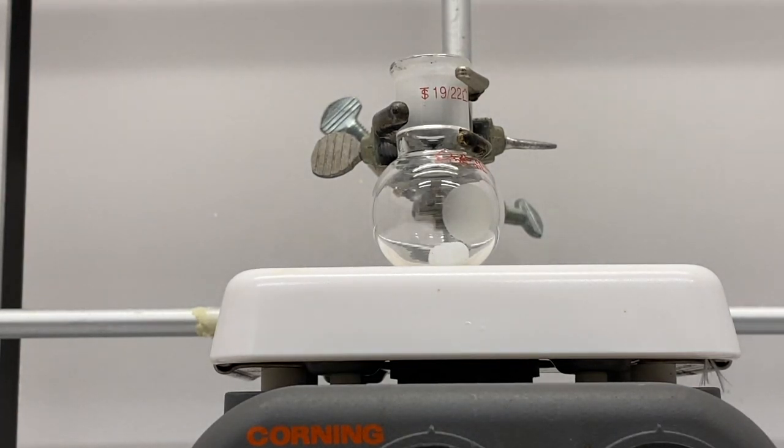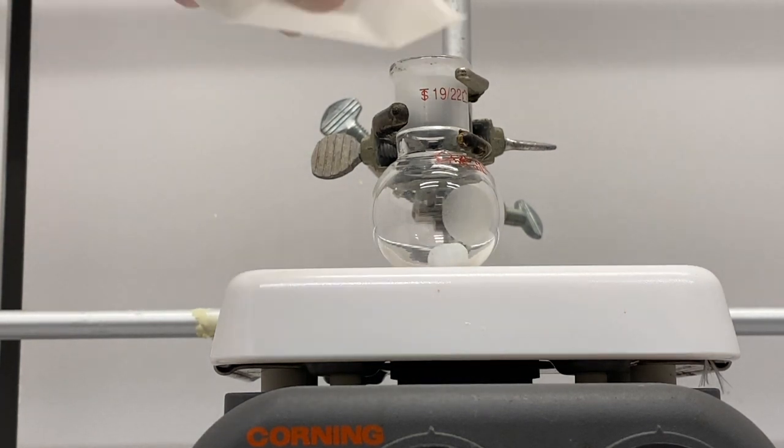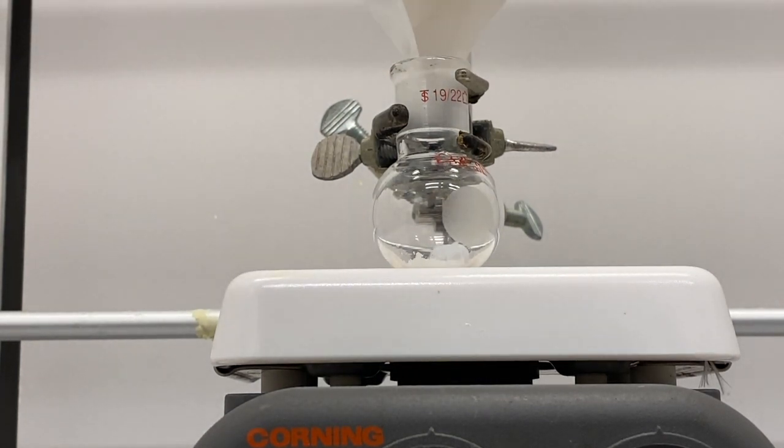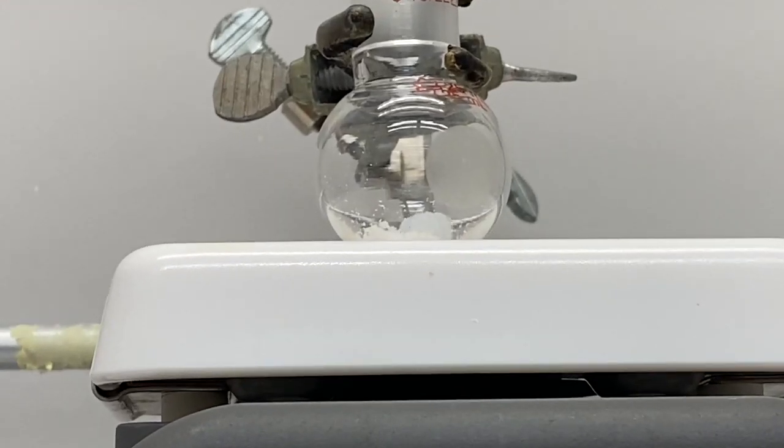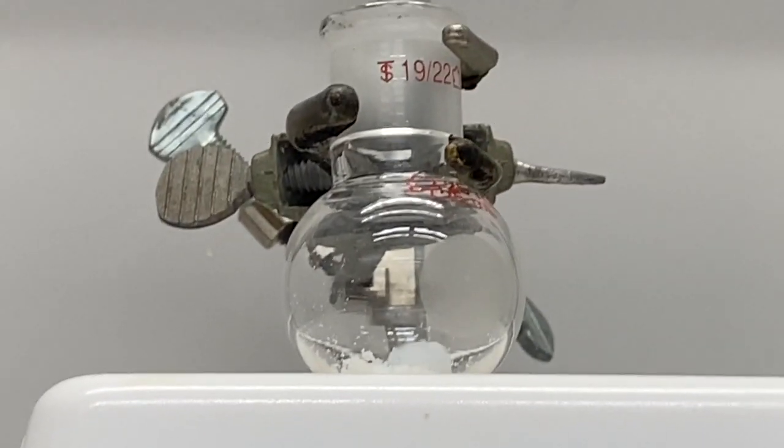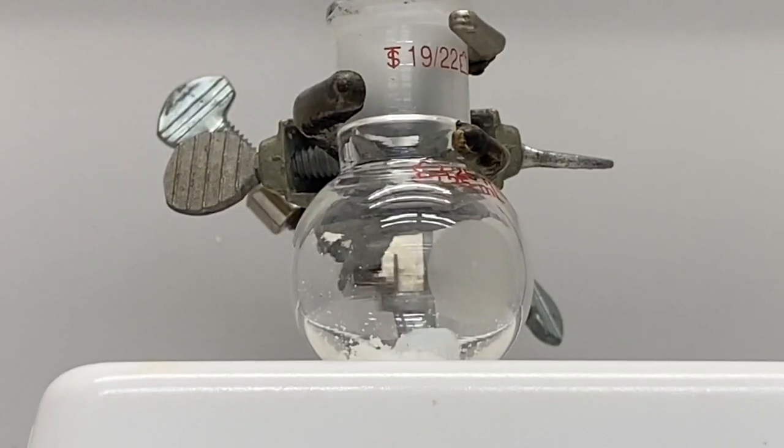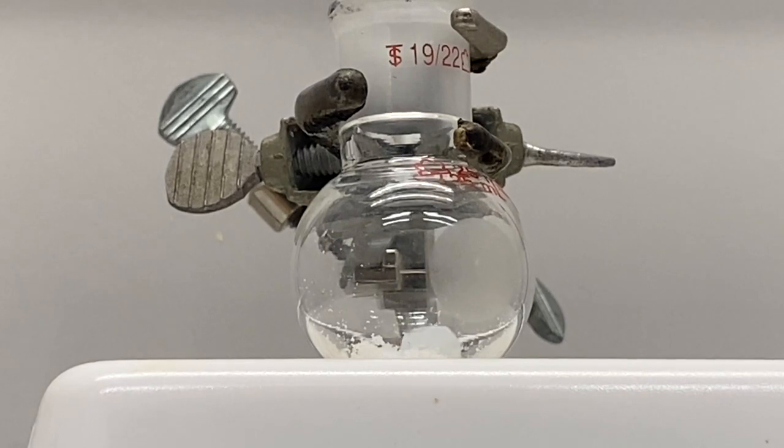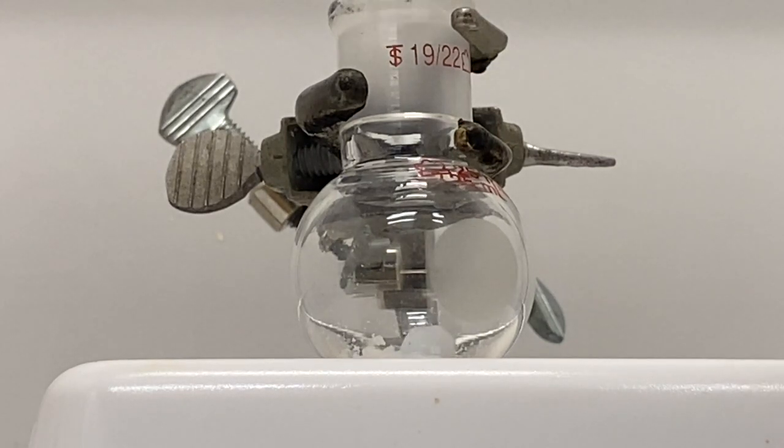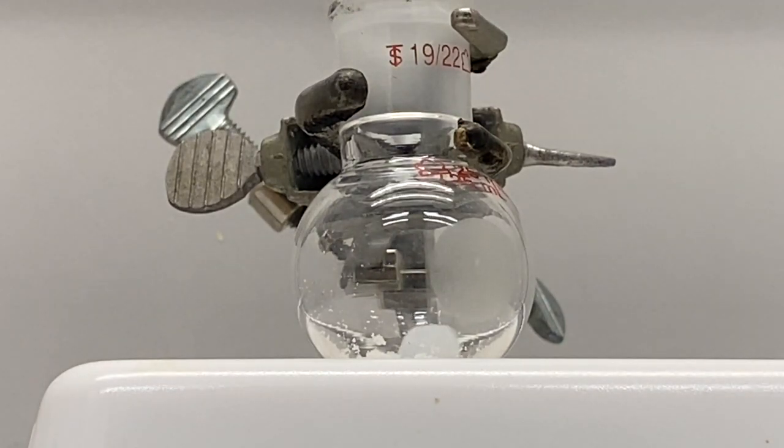So we have our flask over our stir plate and it's stirring. You can see the white stir bar going to the bottom. We're going to add our sodium borohydride. Alright, so we added our sodium borohydride. We're going to take the spatula and spray all the bit of excess with the weight in there.